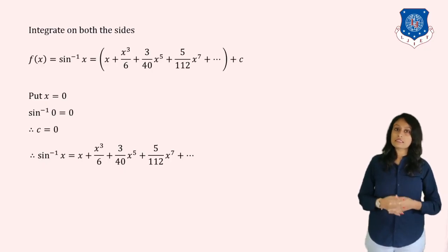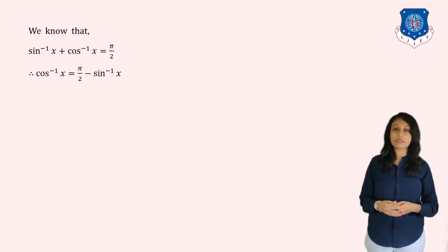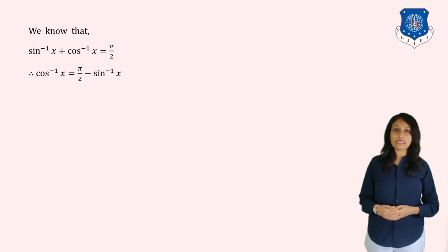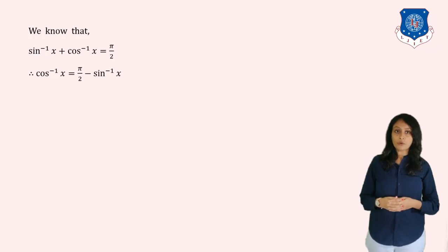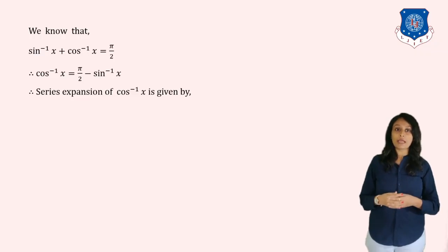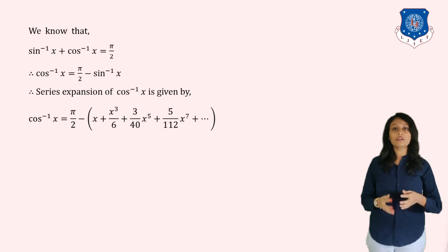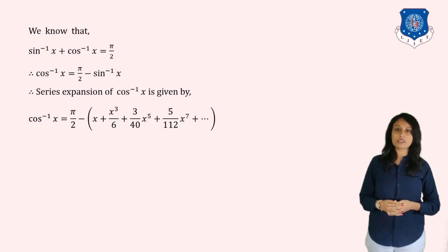Next, find the series of cos⁻¹x. Using the identity sin⁻¹x + cos⁻¹x = π/2, we get cos⁻¹x = π/2 − sin⁻¹x. Just substitute the series of sin⁻¹x to obtain: cos⁻¹x = π/2 − (x + x³/6 + (3/40)x⁵ + …).